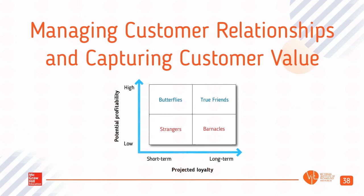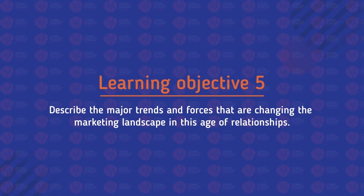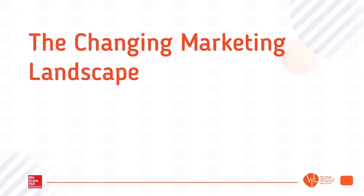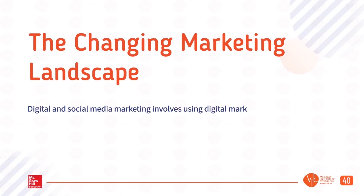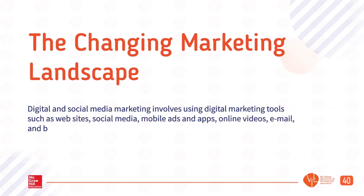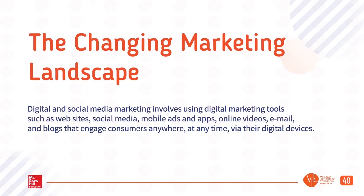Learning Objective 5: Describe the major trends and forces that are changing the marketing landscape in this age of relationships. The changing marketing landscape: Digital and social media marketing involves using digital marketing tools such as websites, social media, mobile ads and apps, online videos, email, and blogs that engage consumers anywhere, at any time, via their digital devices.